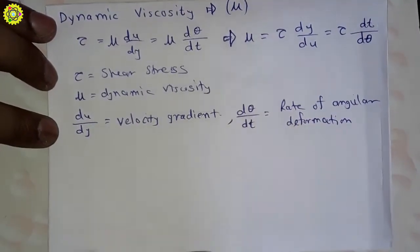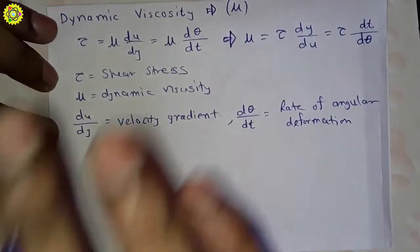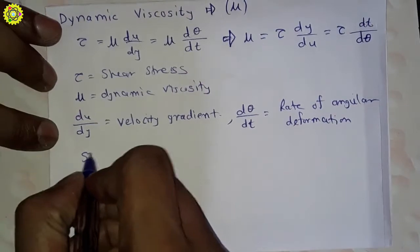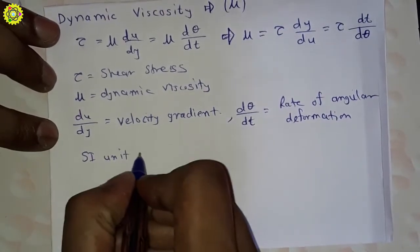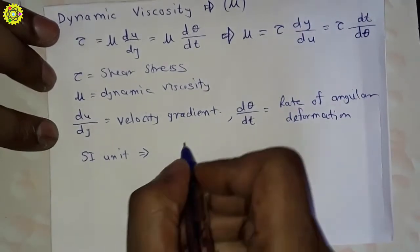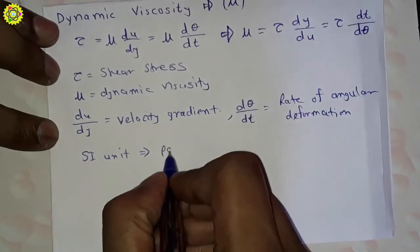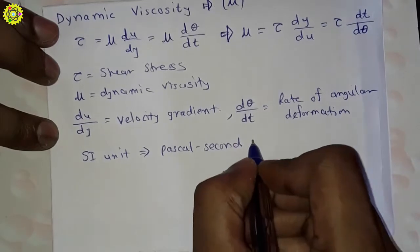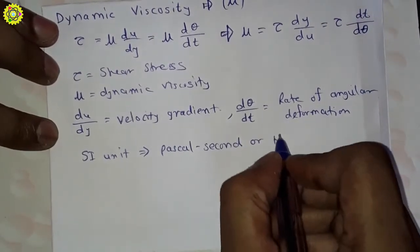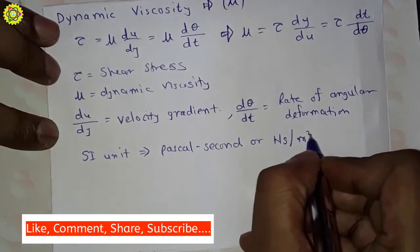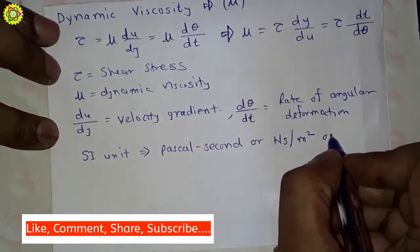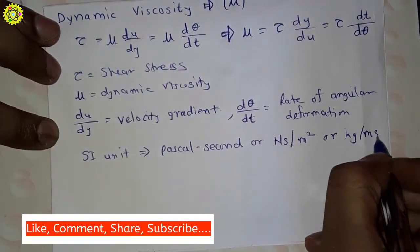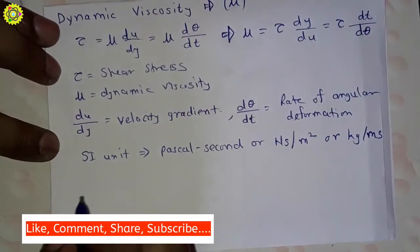Now, the SI unit of dynamic viscosity is Pascal second, or Newton second per meter square, or kg per meter second.